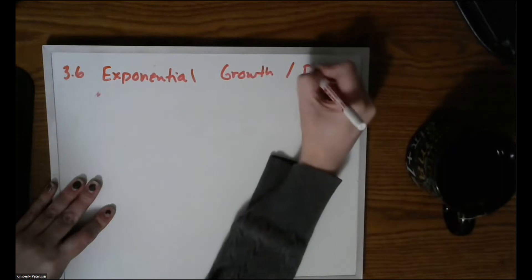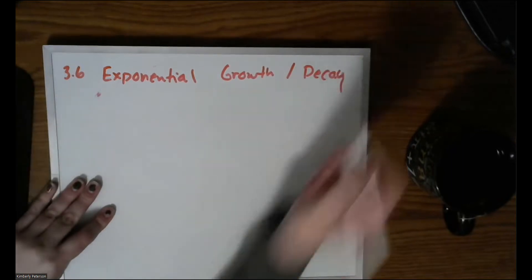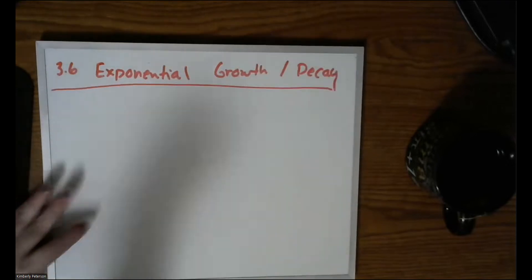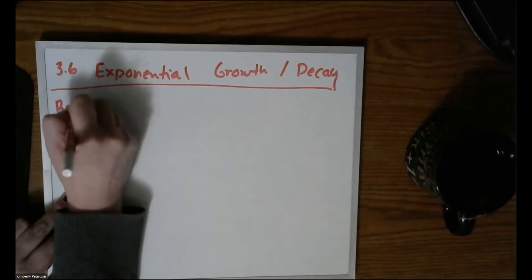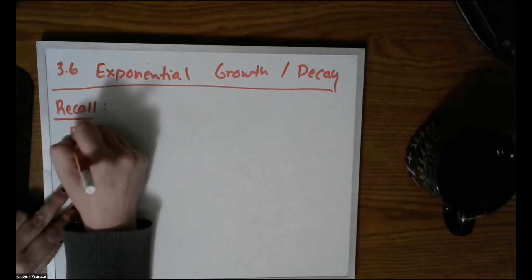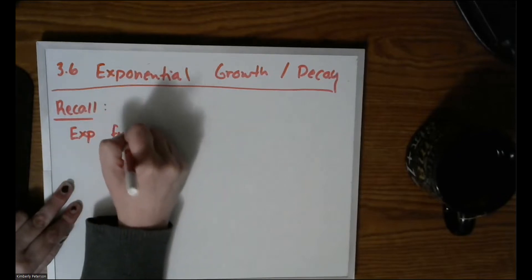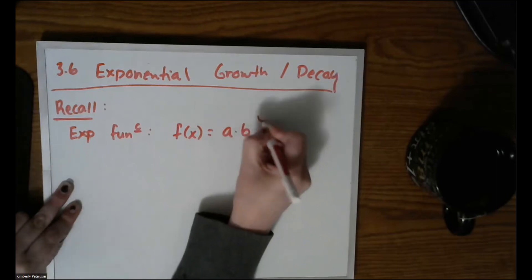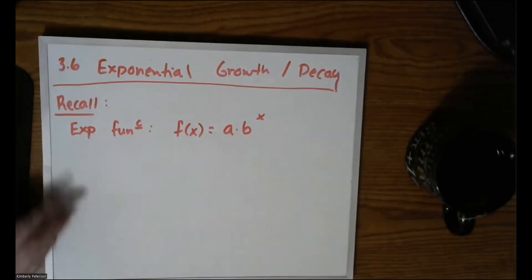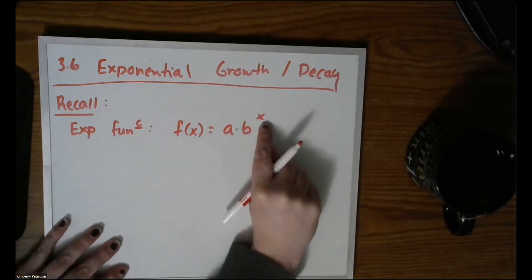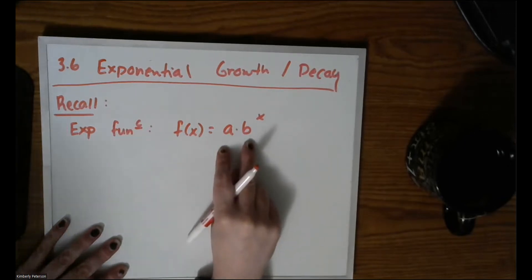I have just a couple of examples I'd like to go over. Again, these are typically word problems, so we'll need to do summaries and take our word problem approach. But first, let's just quickly review our exponential functions. An exponential function will typically look like f(x) = a·b^x. Notice the placement of the variable - x is the only variable.